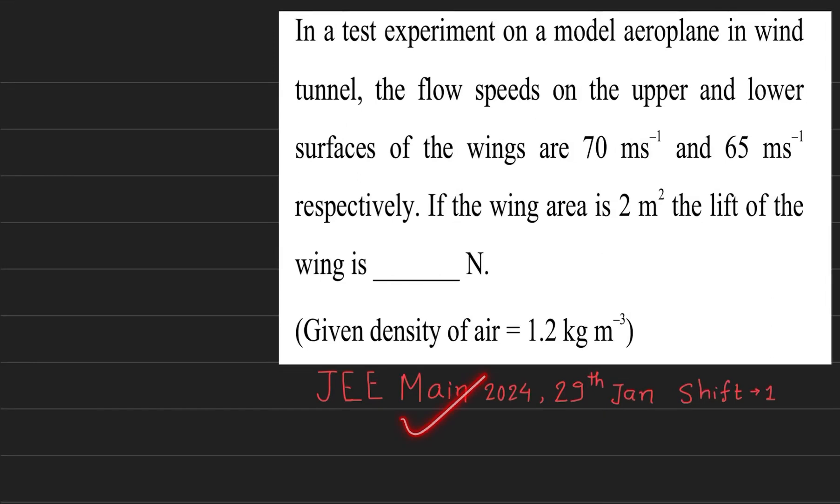Hello, this is a question from JEE Main 24th January, 29th January, first shift. In a test experiment on a model airplane in a wind tunnel, the flow speeds on the upper and lower surfaces of the wings are 70 meters per second and 65 meters per second respectively. If the wing area is 2 square meters, the lift of the wing is blank Newtons.